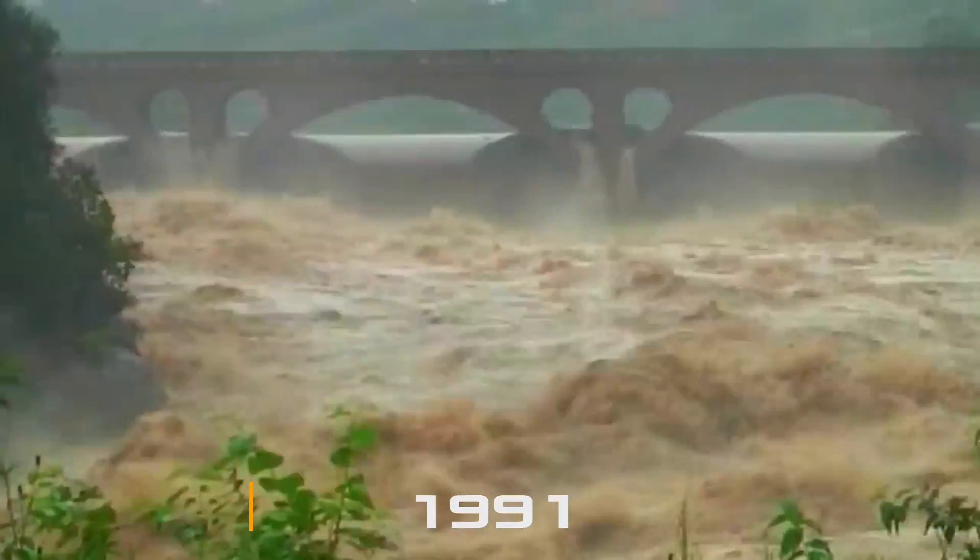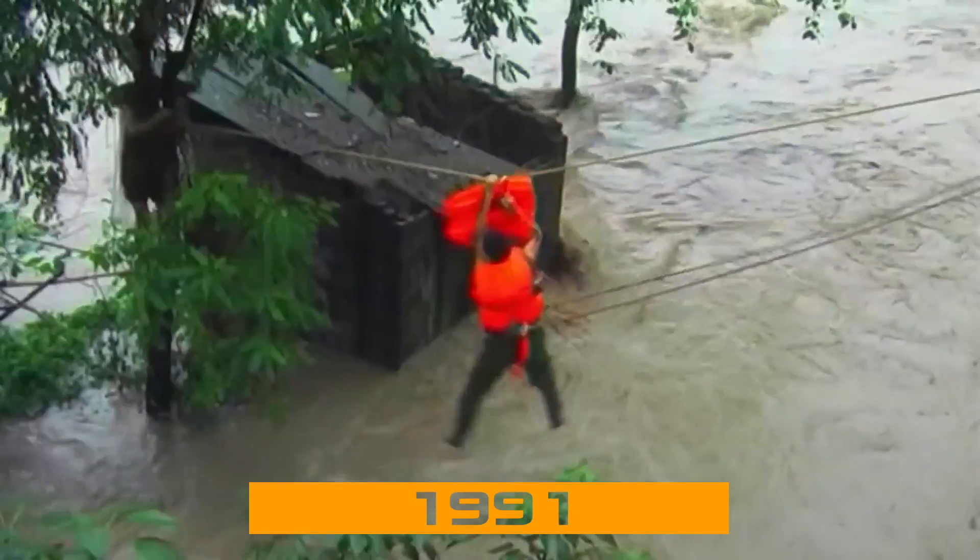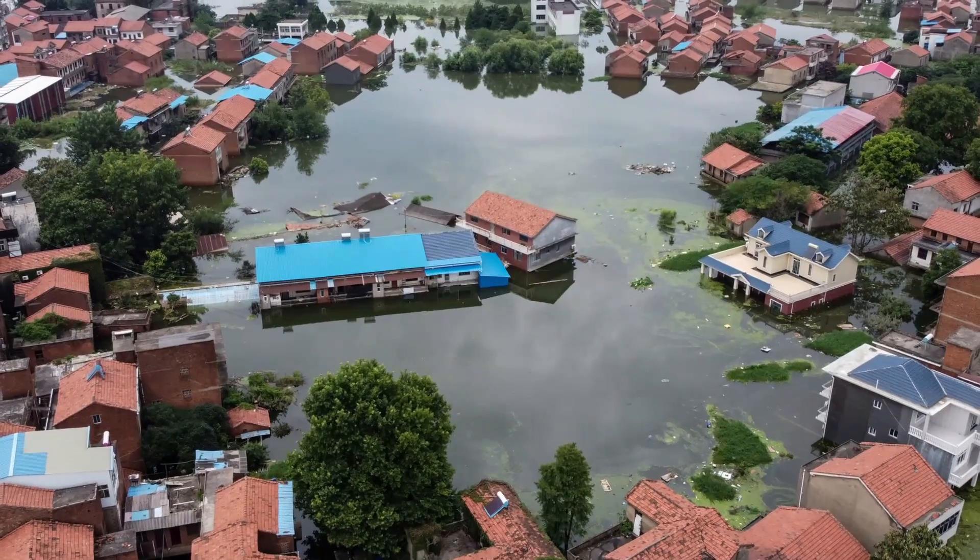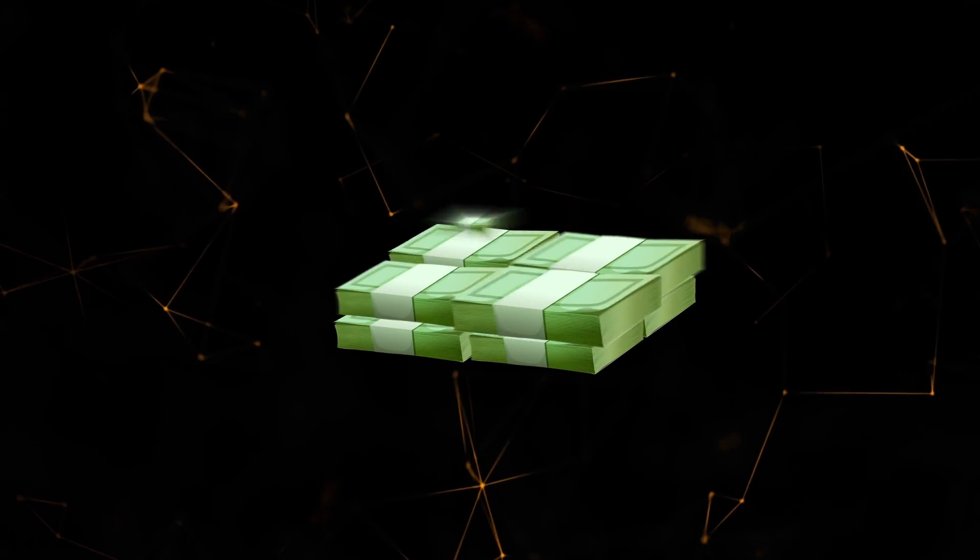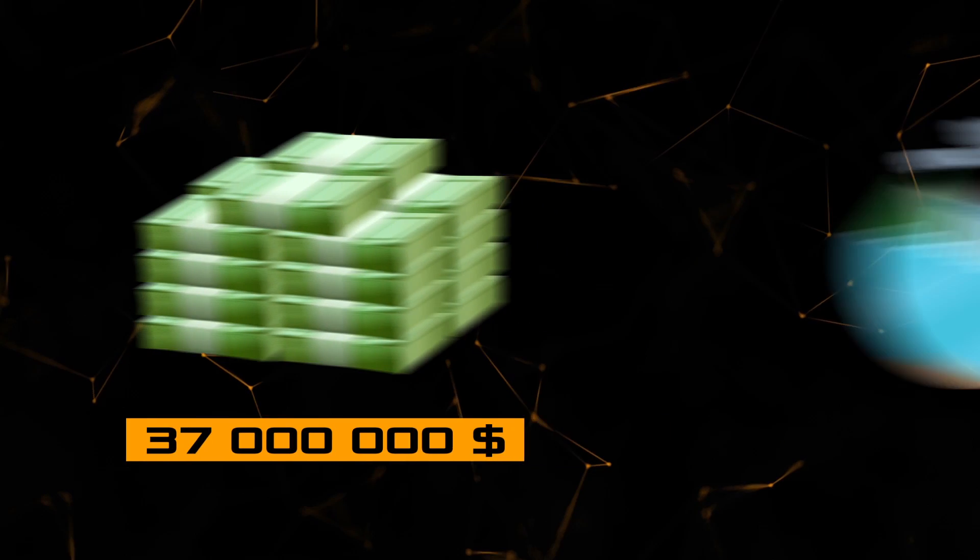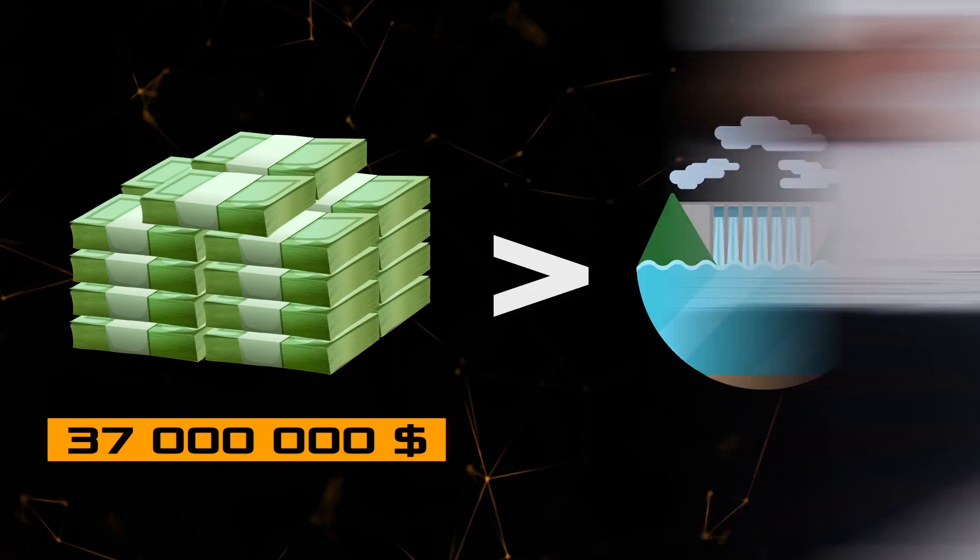However, everything changed in 1991 when there was a large-scale disaster on the Yangtze River. That year the floods were especially strong. The cumulative cost of the damage from the flooding in the Yangtze basin alone amounted to more than 37 billion dollars, more than the estimated cost of the hydroelectric power plant.